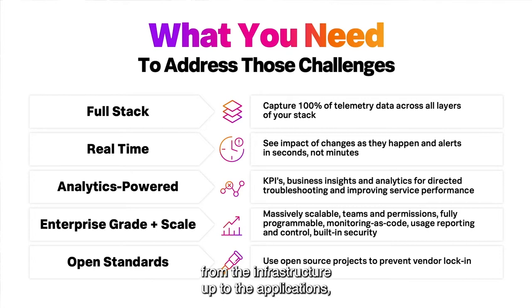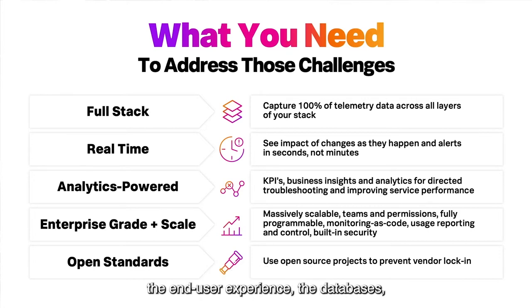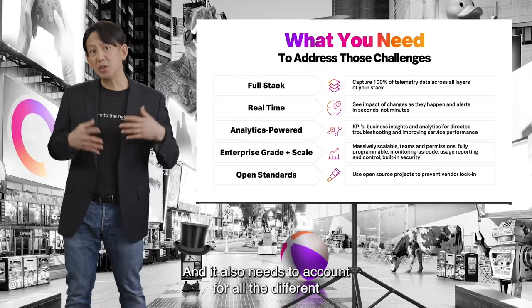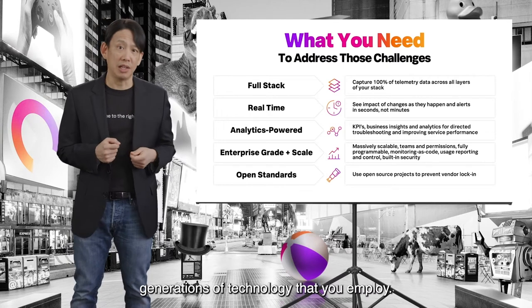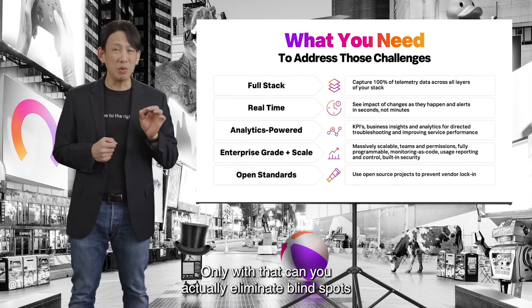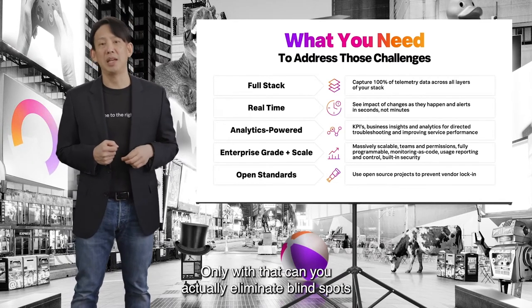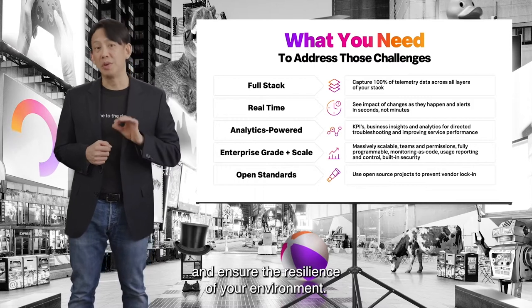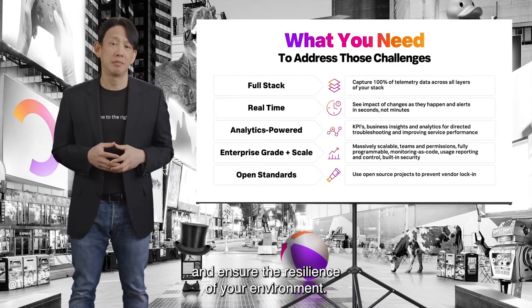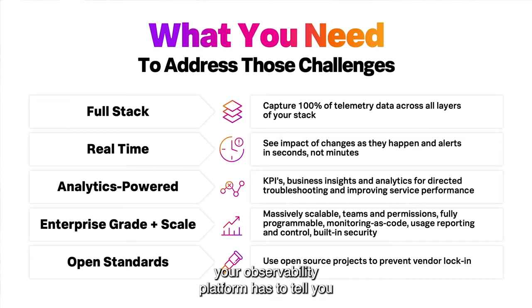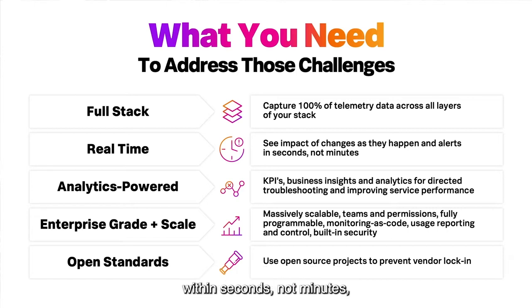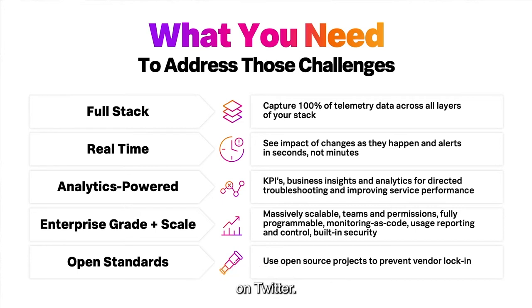It also needs to account for all different generations of technology you employ — only then can you eliminate blind spots and ensure the resilience of your environment. Second, when something starts to go sideways, your observability platform has to alert you as quickly as possible — within seconds, not minutes — and preferably before your customers tell you about it on Twitter.